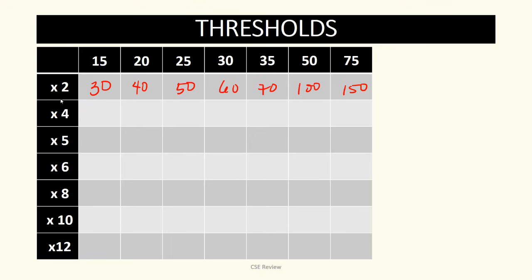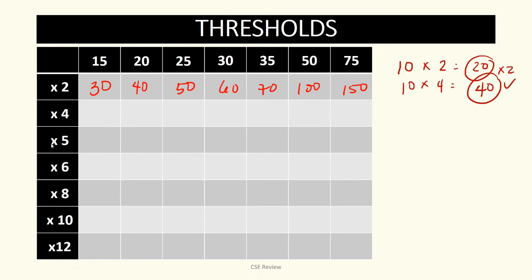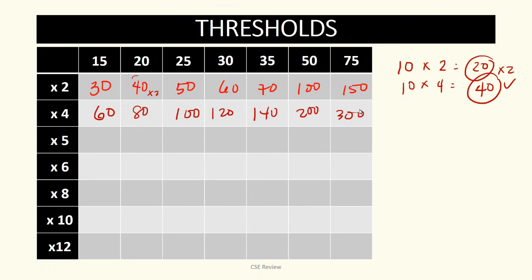Times 2 is actually two times 4. If 10 times 2 is 20, then 10 times 4 is 20 times 2, or 40. That means 15 times 4 is two 30s, or 60. So times 4 of 20 is just times 2 of that result, which is 80. Then you get 100, 120, 140, 200, and 300. Just knowing the threshold number and the times 2 value can help a lot.